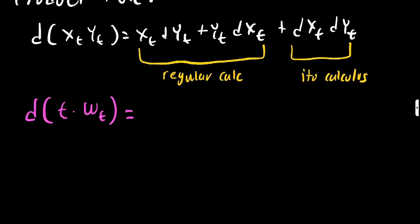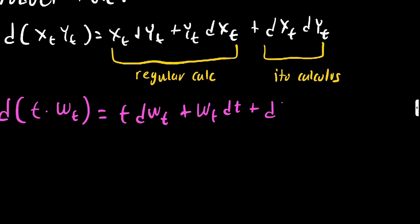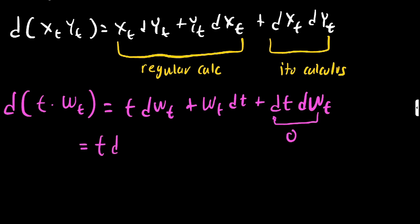In this case what we're going to do is notice that hey this is just going to be t dW_t plus W_t dt, so this is just standard product rule, but what we add from here is the extra term from here, so dx dy_t in this case would be dt dW_t. Now there's something interesting to note here. This term in stochastic calculus turns out to be zero, so all we're left with is still the ordinary product rule.